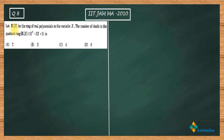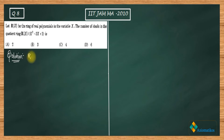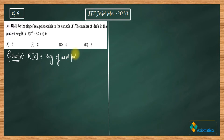Let us have a look. Let R[x] be the ring of real polynomials in the variable x. The question asks about the number of ideals in the quotient ring. We are given the ring of real polynomials R[x], and inside this R[x] there is an ideal generated by the polynomial x² - 3x + 2.